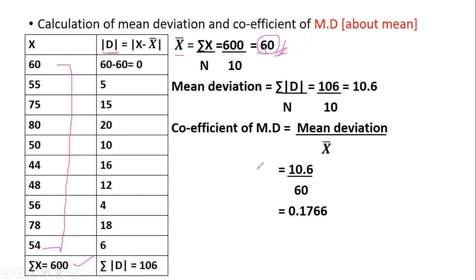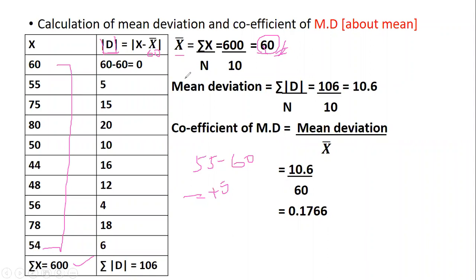Now let's find modulus d. The formula is |x − x̄|, where x̄ = 60 is fixed. So: 60 − 60 = 0; 55 − 60 is usually minus 5, but since we have the modulus sign, the minus is ignored and it becomes 5. Then 75 − 60 = 15.